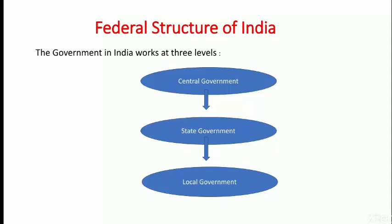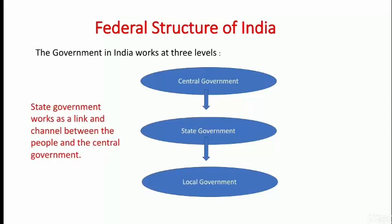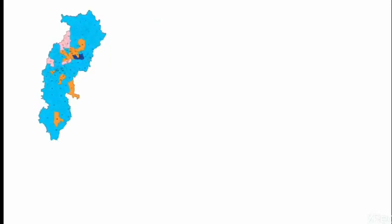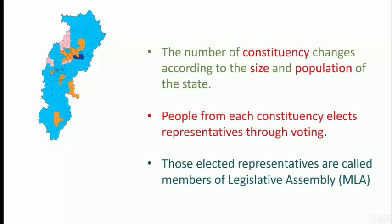Now in this class we are going to learn about the state government. The state government works as a link and channel between the people and the central government. Each state in India has a legislative assembly, and each state is divided into different areas or constituencies. For example, in Chhattisgarh we have 90 constituencies, as you can see on the map.